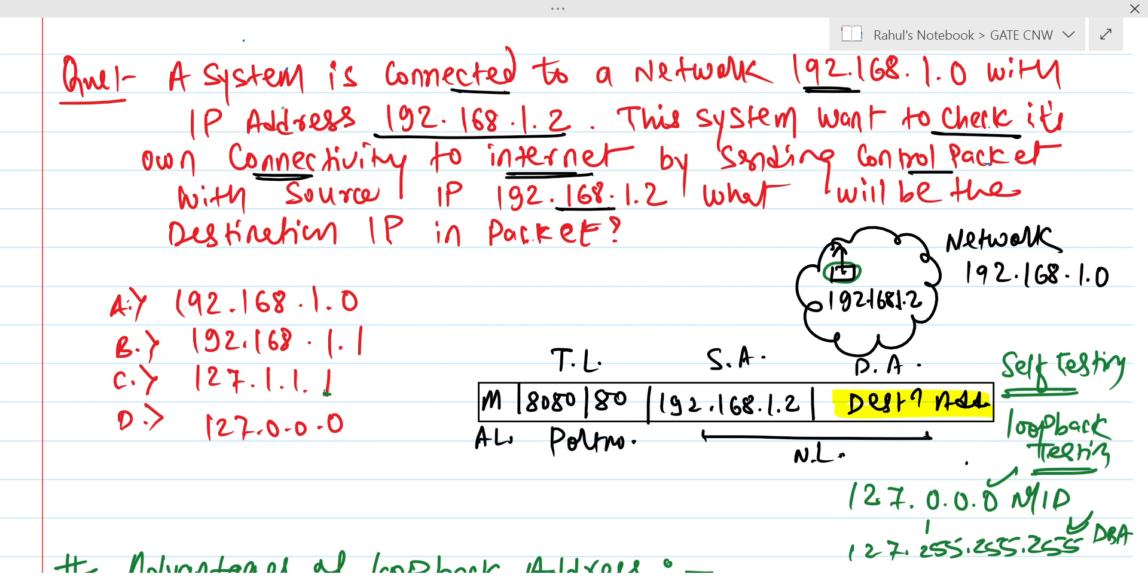What is the remaining one? You can use any address between this range that is going to work as a valid loopback testing. Here, options 192 and A and B are neglected, we can ignore them because they are not following the rule of loopback addressing. Here, 127.0.0.0 is given.